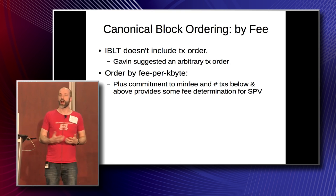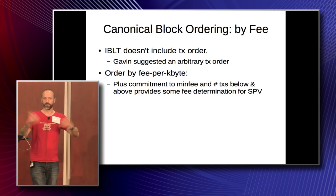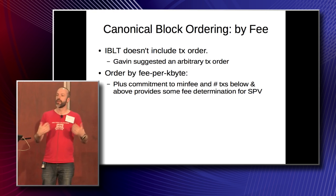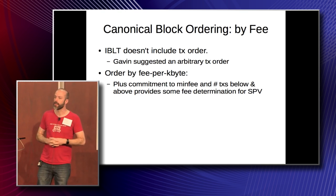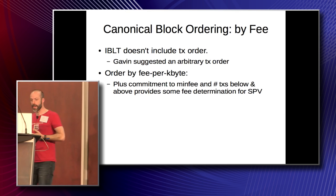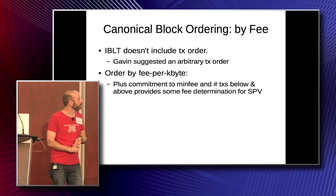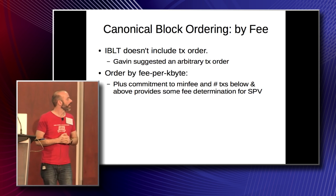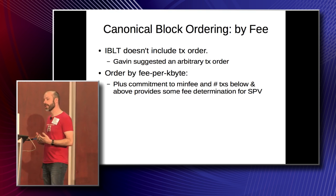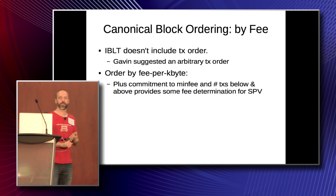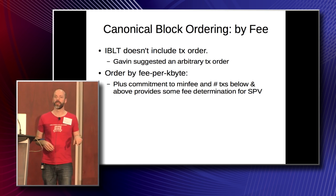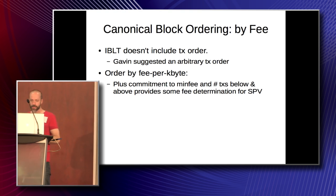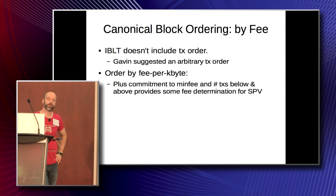Now, IBLT encodes what's in the block but it doesn't encode the order. Gavin suggested picking an arbitrary order and making sure you put your block in that order so you don't have to transmit that information. I want to float the idea that we could order by fee per kilobyte. If we're picking an arbitrary order anyway, there are a couple of things we could do. If you have a commitment to the minimum fee value and a number of transactions below and above, that would allow some fee determination for SPV. If you also put in the number of transactions which are dependent, you could actually SPV prove that that value is correct. A commitment like that would allow a lightweight wallet to have some insight into fee levels.